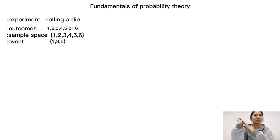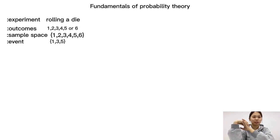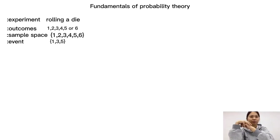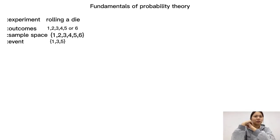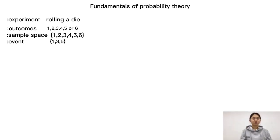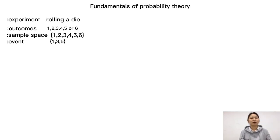An experiment is an activity or a process which has observable results. For example, rolling a die is an experiment. The possible results of an experiment are called outcomes. The outcomes of rolling a die once are 1, 2, 3, 4, 5, or 6.